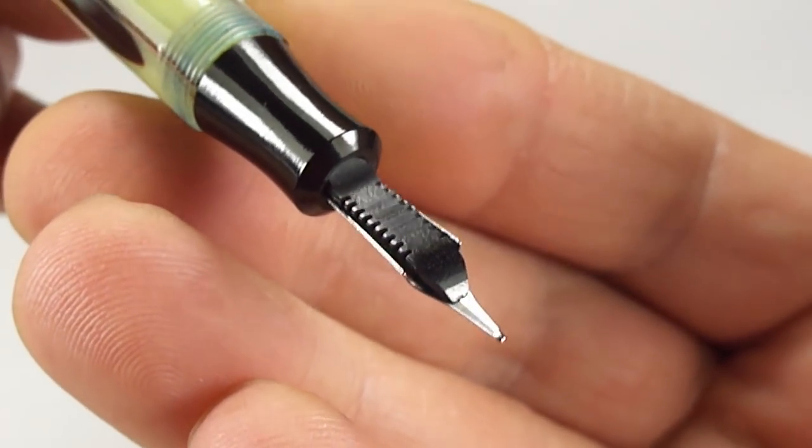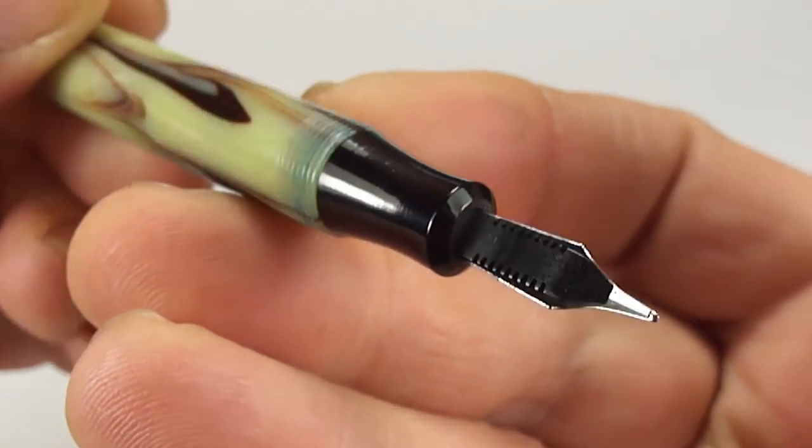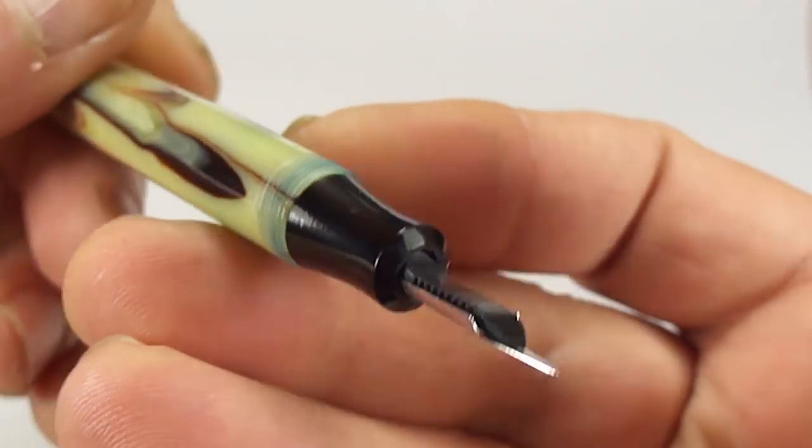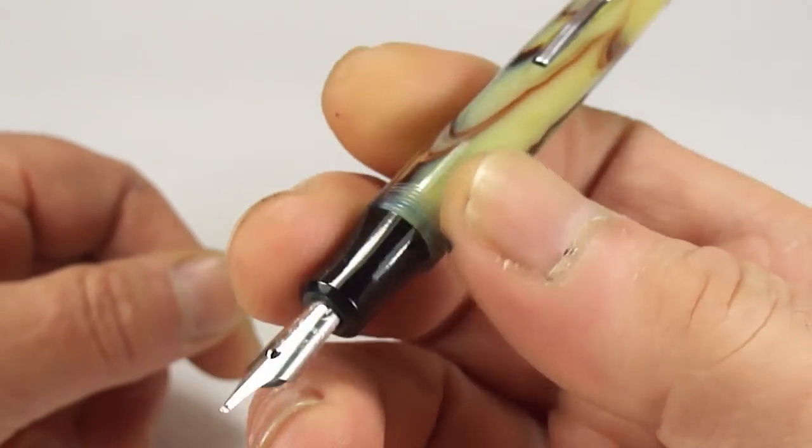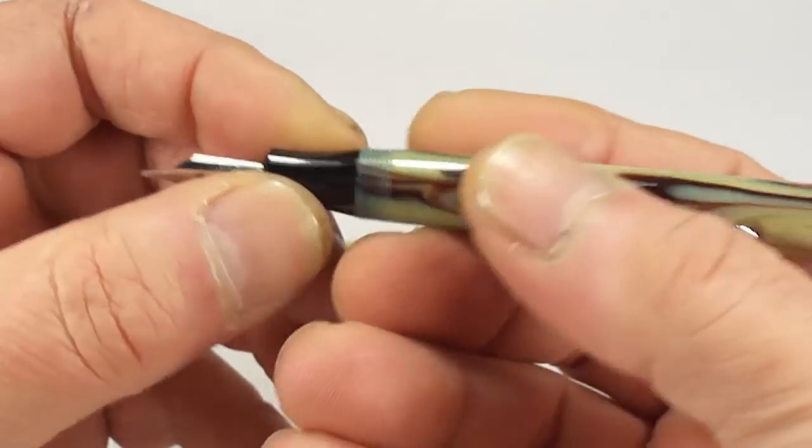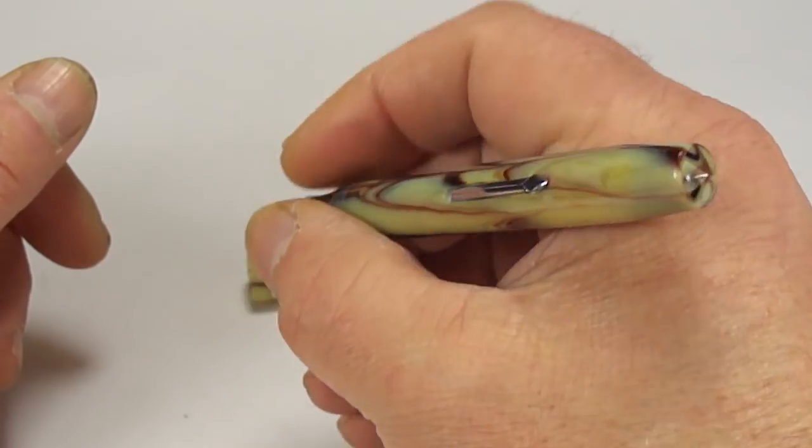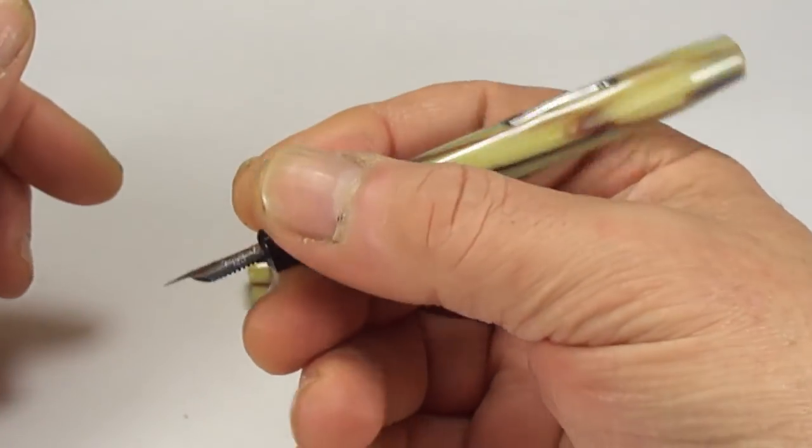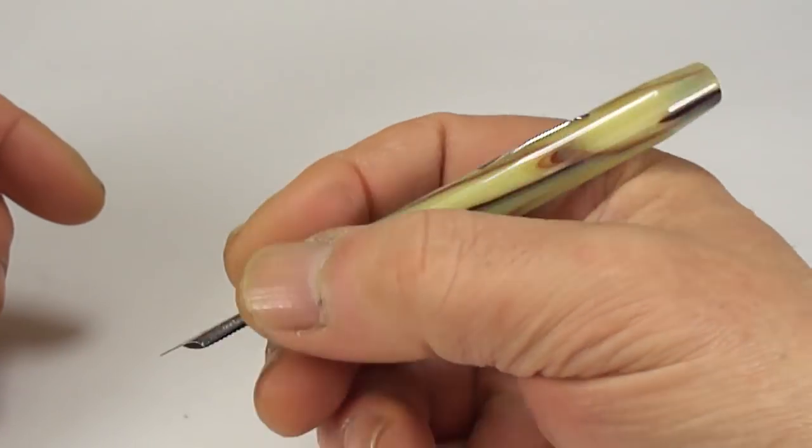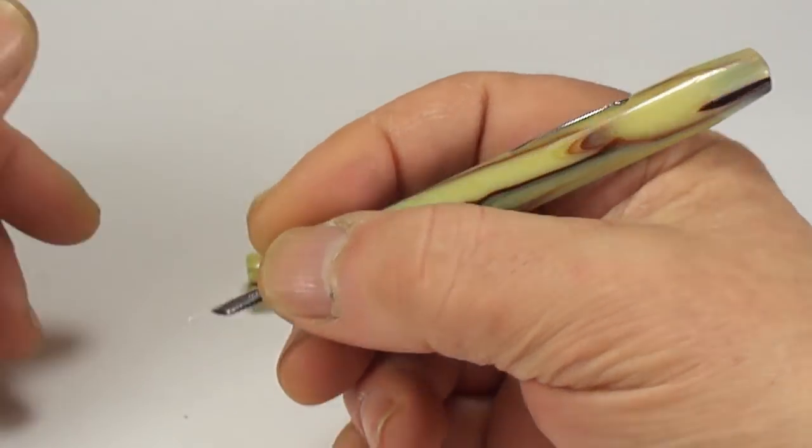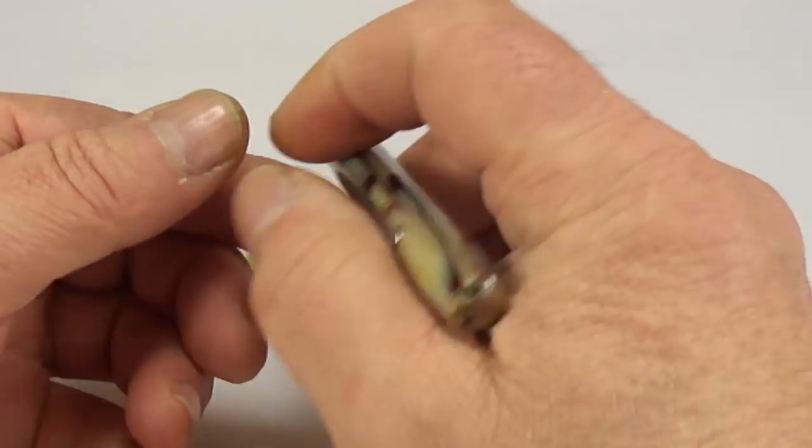The feed underneath, quite a standard feed for that particular period, what we term as a comb feed. Again, you can see everything is lovely and clean. I've restored it, we've put a new sack in it, and it's actually ready to go back to the customer, so I'm sure he's going to be delighted with this pen. Size-wise, very nice. It's quite a chunky pen, it's a very comfortable pen to hold as well. It's not small, it's not large. In my large hands, nice and comfortable.